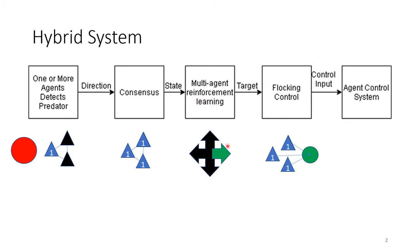Then that's used as a state for the reinforcement learning component so that the agents learn to go in a direction away from the predator. This direction is a target using the flocking control algorithm so that the agents flock to this target location away from the predator, which gives you a control input for the agents to determine their acceleration.